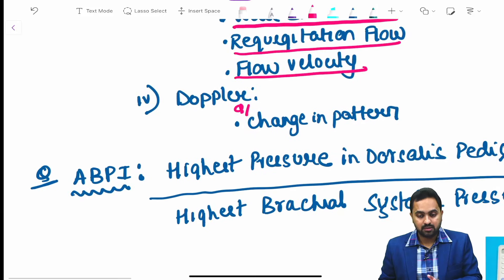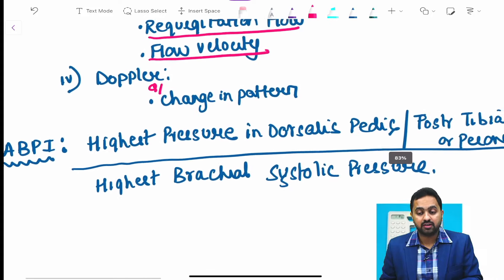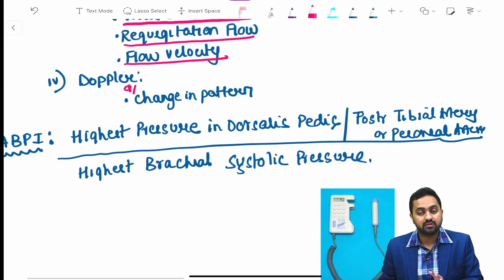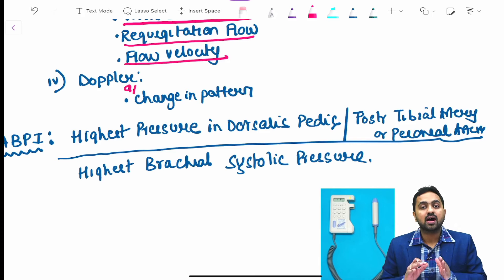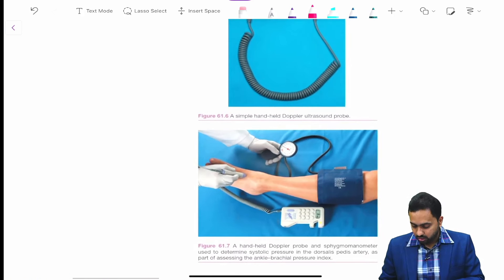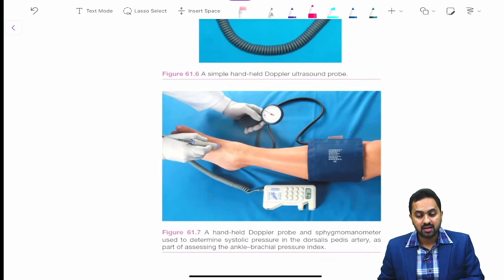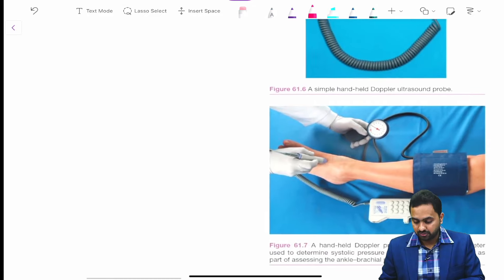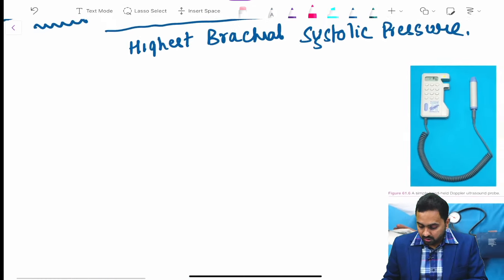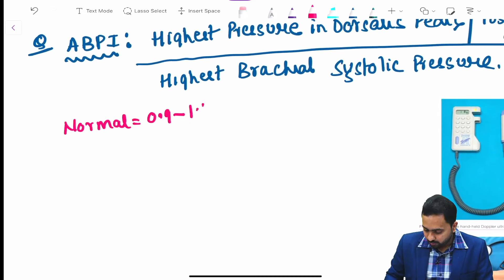Now regarding ABPI, ankle brachial pressure index. This is a ratio of the highest pressure in dorsalis pedis, posterior tibial artery, or peroneal artery to the highest brachial systolic pressure. You can take a look at this diagram.